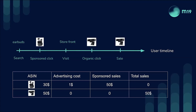Then a couple of days or hours after, this same user dropped off, went doing other things, and came back to Amazon. For some reason, he is now looking at the storefront of this same brand — a Chinese electronics brand making good products. He sees a webcam, a camera from the same brand. He clicks on this product; it's an organic click because we are on the storefront, not sponsored. He lands on the product page of this camera and buys it.